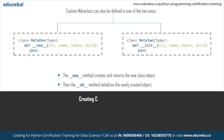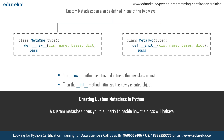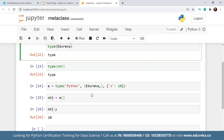Before we begin with the custom metaclass in Python, we must understand the __new__ and __init__ dunder methods, also called special methods. These methods are used to define a custom metaclass. Whenever a class is instantiated — meaning you create an object — both methods are called: __new__ is called when the object is created, and __init__ is called when the object is initialized.